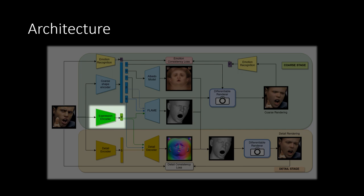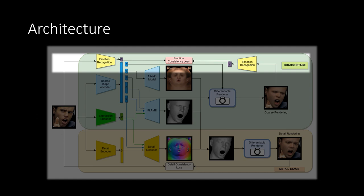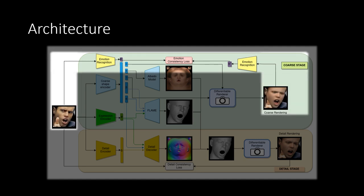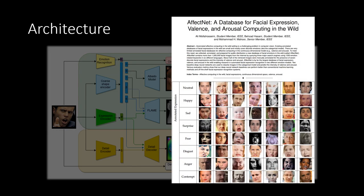Specifically, EMOKA augments DECA's encoder-decoder architecture with an additional trainable prediction branch for facial expression. A novel perceptual emotion similarity loss provides supervision using the reconstructed expressions during training. The emotion similarity loss passes the rendered 3D reconstruction and the input image through an emotion recognition network, and measures the difference between the resulting emotion-embedding vectors.